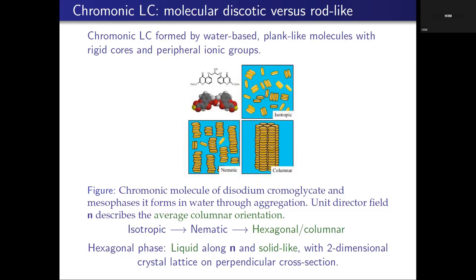When the concentration of these molecules in water is very small, you have small packages and the excess of cylinders are aligned in any direction — it's isotropic. When you increase the concentration, they tend to form longer columnar structures that become more aligned — that's the nematic phase. At still higher concentration, these columns grow more, and then they get together forming columns of six molecules surrounding a central one, giving a very distinctive hexagonal structure. So the typical phase transition for lyotropic chromonics is from isotropic to nematic to hexagonal or columnar, as concentration increases.